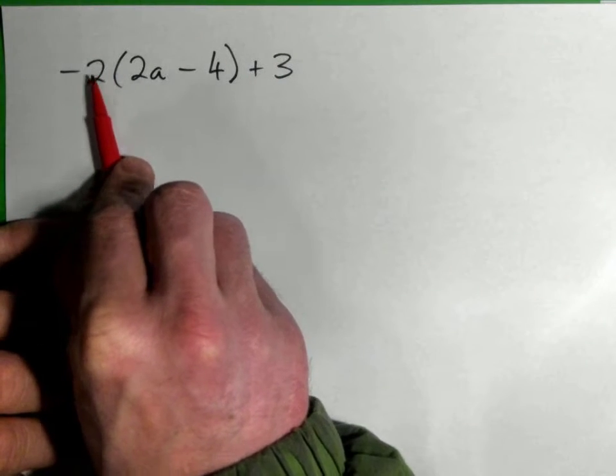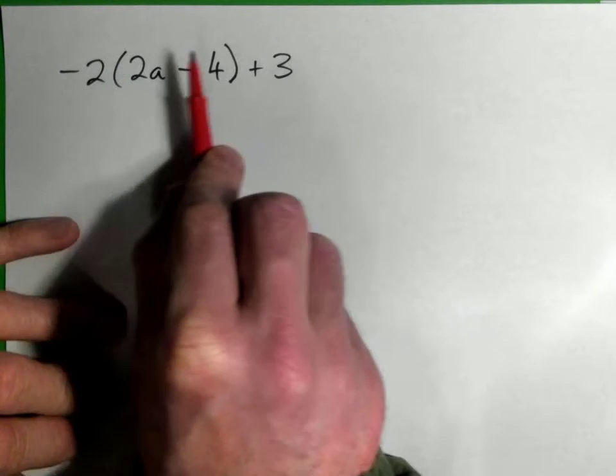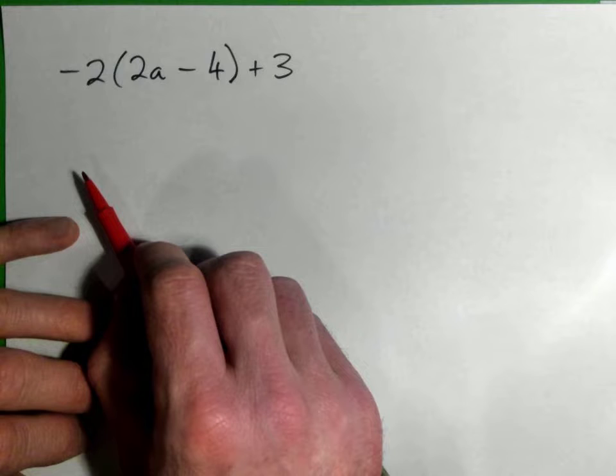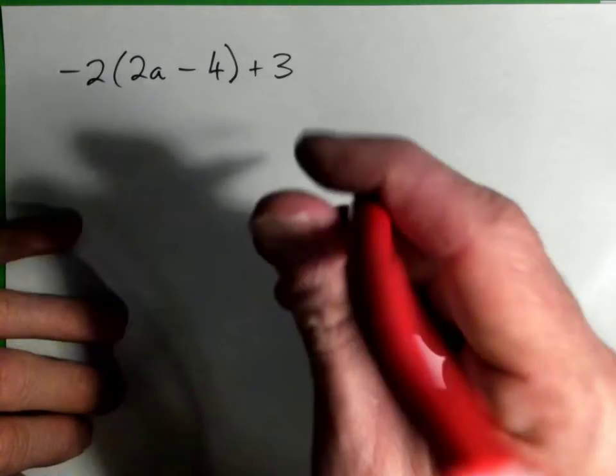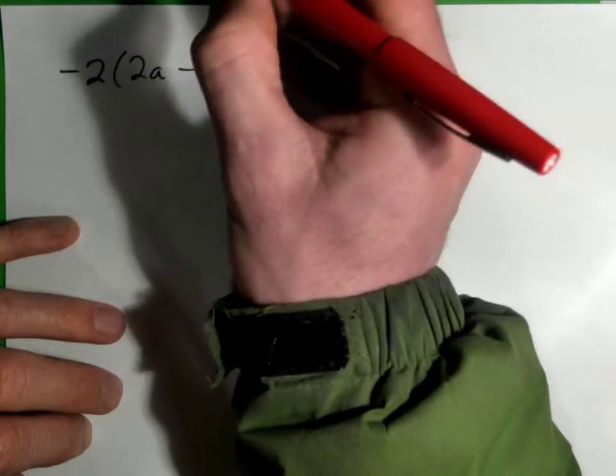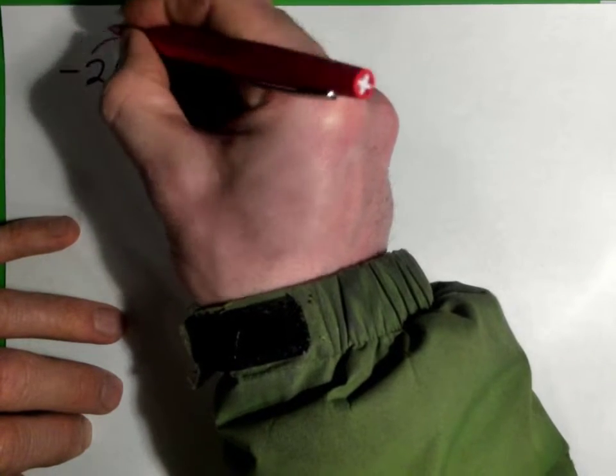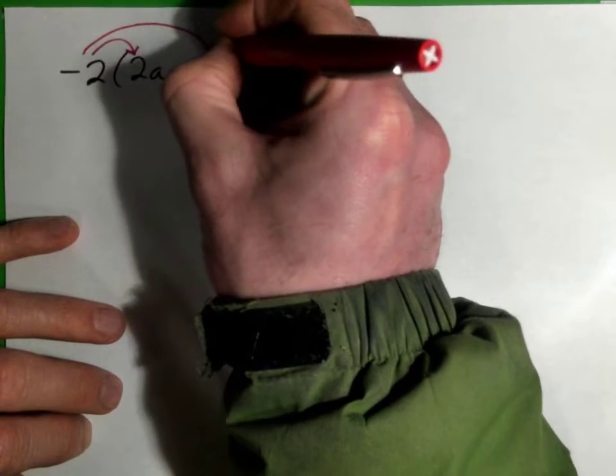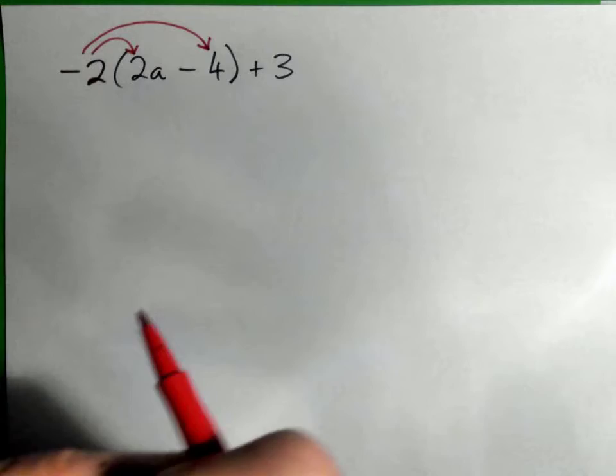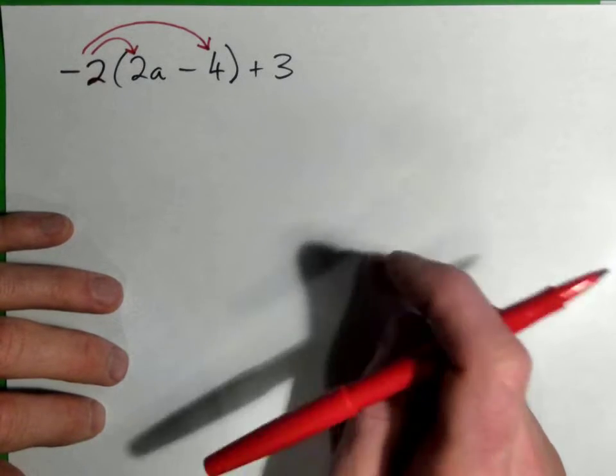going on because we have a number beside parentheses. So we ought to multiply using the distributive property first, and that will get rid of the parentheses. After we do that, we'll add like terms and tidy things up.